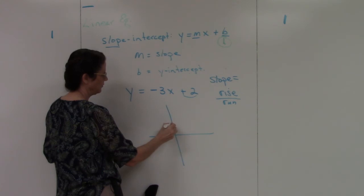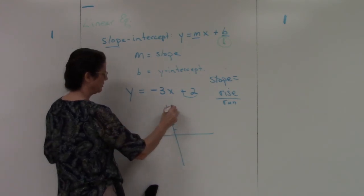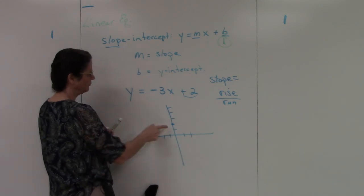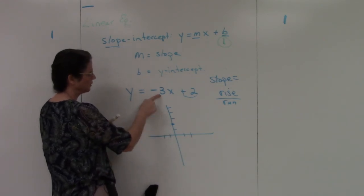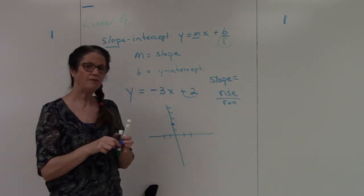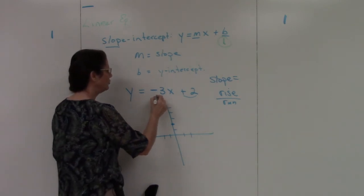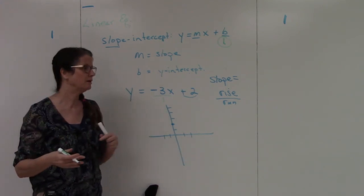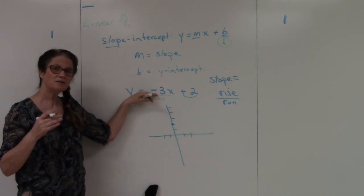So there's my positive 2. Then from there, put in my marks. Then from this positive 2, I'm going to rise 3. Now, there's nothing underneath it. So anytime you have a whole number, all you have to do is put it over 1. Negative 3 is the same as negative 3 over 1. So I'm going to rise 3.